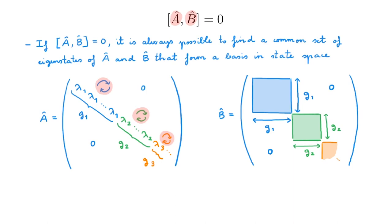Once we have done that, we can make the statement here. So if you only remember one thing from this video, it should be this result. Operators that obey this result are called compatible observables in quantum mechanics, and as explained in the videos on measurements, compatible observables can be measured simultaneously.